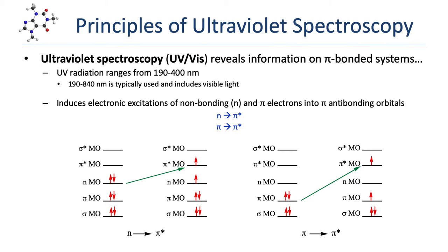When we look at the relative energies of molecular orbitals in a molecule, we see that bonding molecular orbitals are lowest in energy, then non-bonding orbitals, and then the highest are the antibonding orbitals. With that in mind, an n-to-pi-star excitation will require less energy than a pi-to-pi-star excitation. Planck's equation tells us that energy is linearly proportional to frequency and inversely proportional to wavelength. Since pi-to-pi-star requires more energy, it will occur at a lower wavelength than n-to-pi-star.